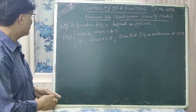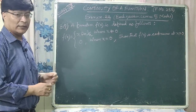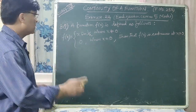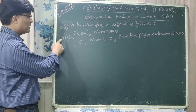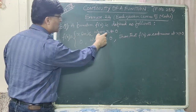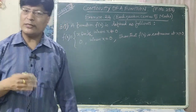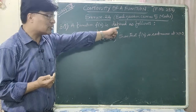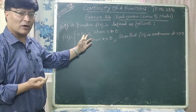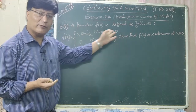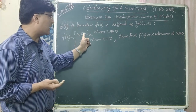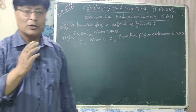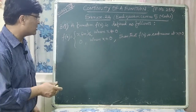Let us do question number 1. A function f(x) is defined as follows: f(x) = x·sin(1/x) when x ≠ 0. The meaning of x ≠ 0 is that either x is greater than 0 or x is less than 0. For x greater than 0 we use f(x) = x·sin(1/x), and also for x less than 0 the same function applies. But when x is exactly equal to 0, then f(x) = 0.